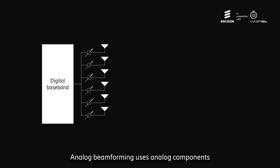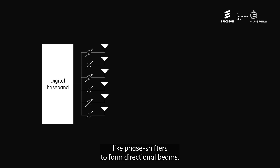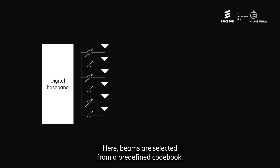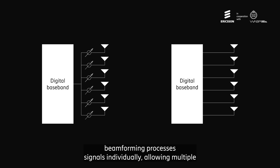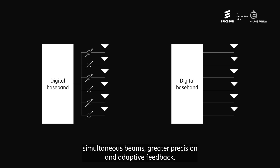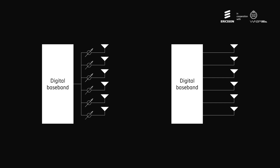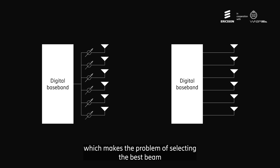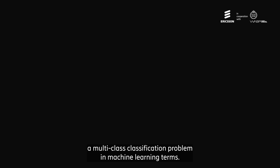There are two main types of beamforming. Analog beamforming uses analog components like phase shifters to form directional beams. It is cost-effective but lacks flexibility and steers only one beam at a time; beams are selected from a predefined codebook. Digital beamforming, on the other hand, processes signals individually, allowing multiple simultaneous beams, greater precision, and adaptive feedback. However, it requires increased computational complexity and power consumption. In this work we use analog beamforming, which makes beam selection a multi-class classification problem in machine learning terms.